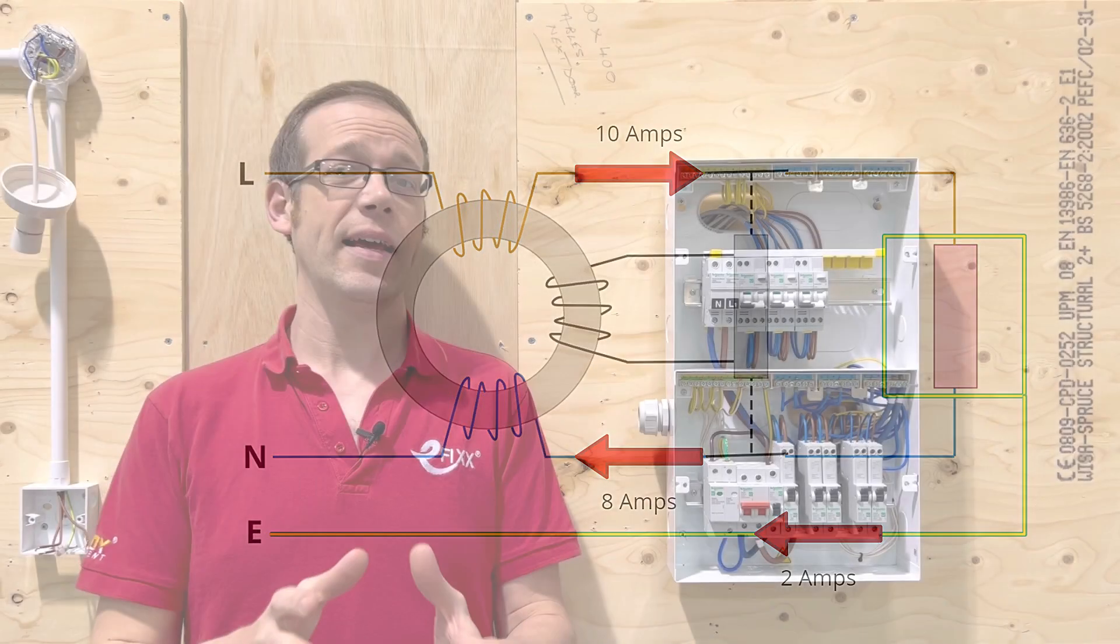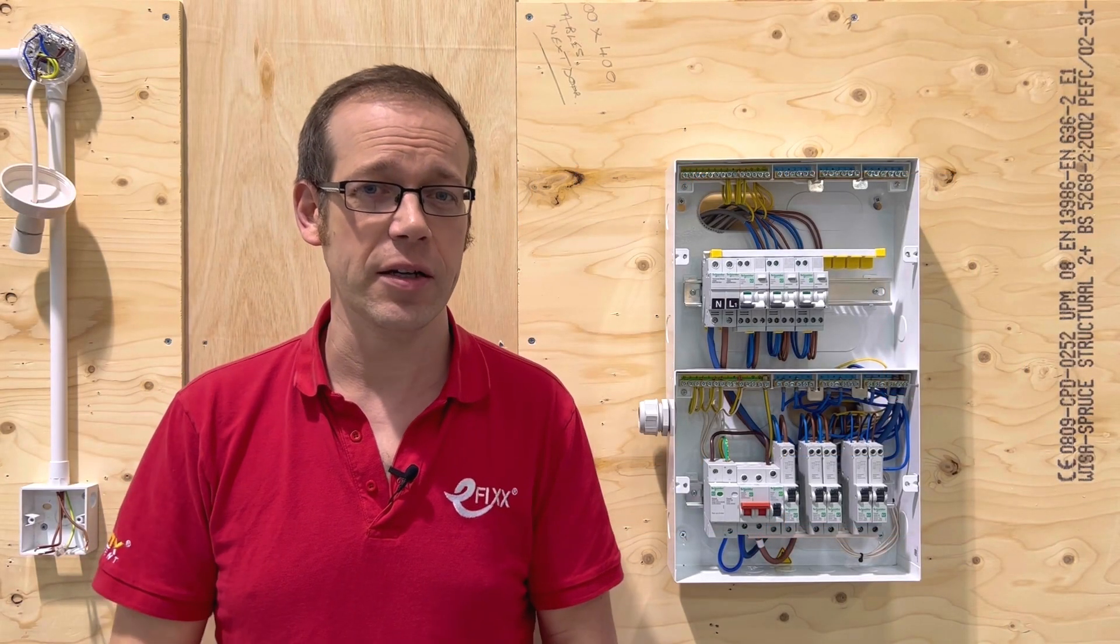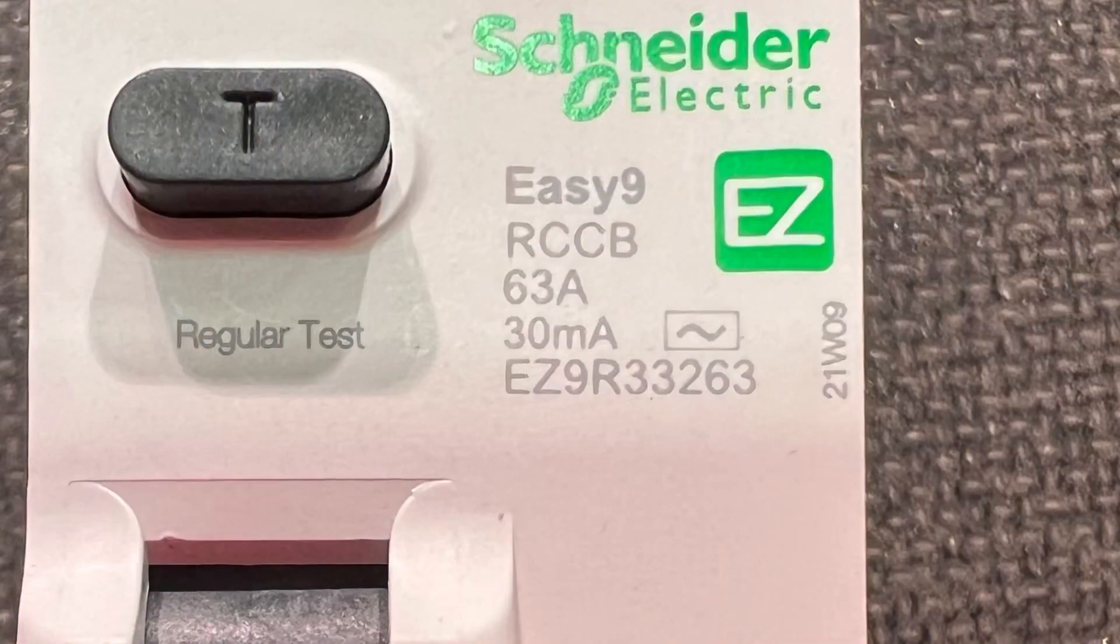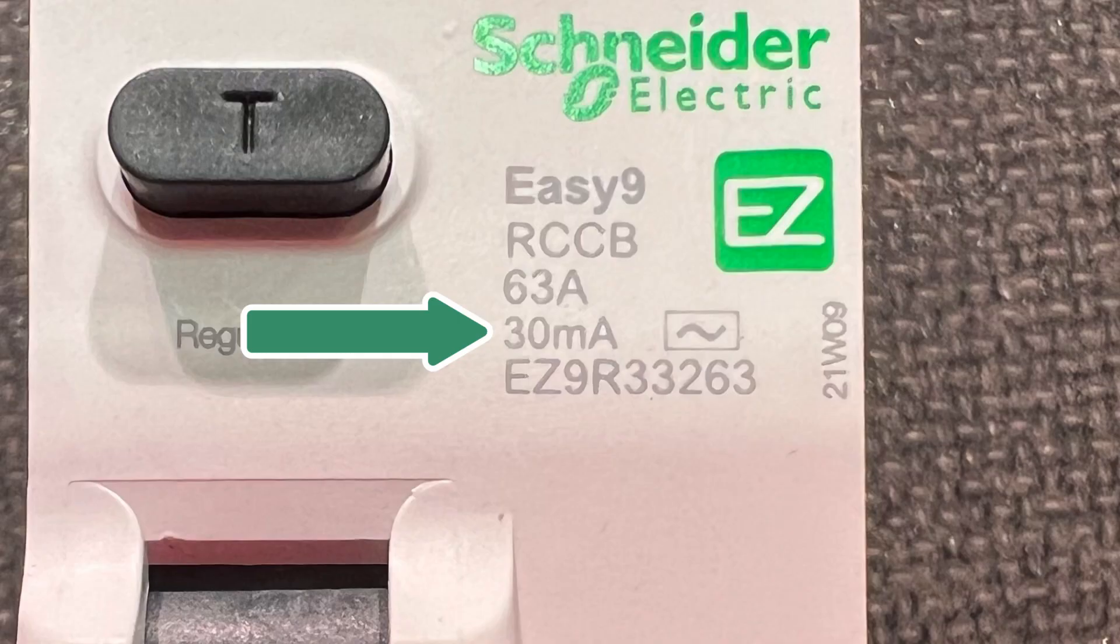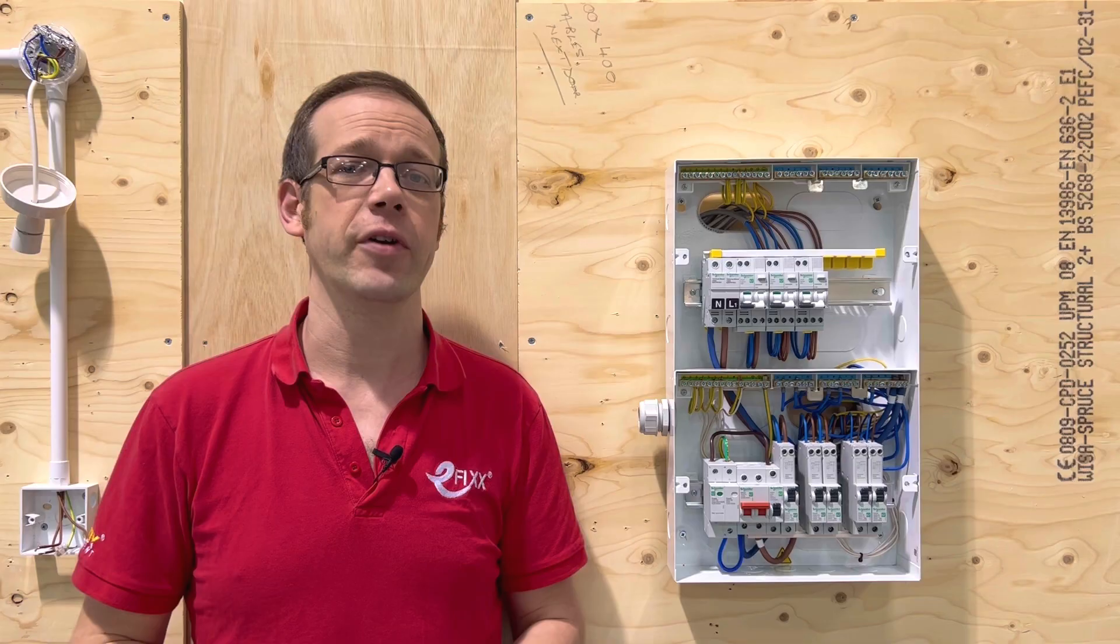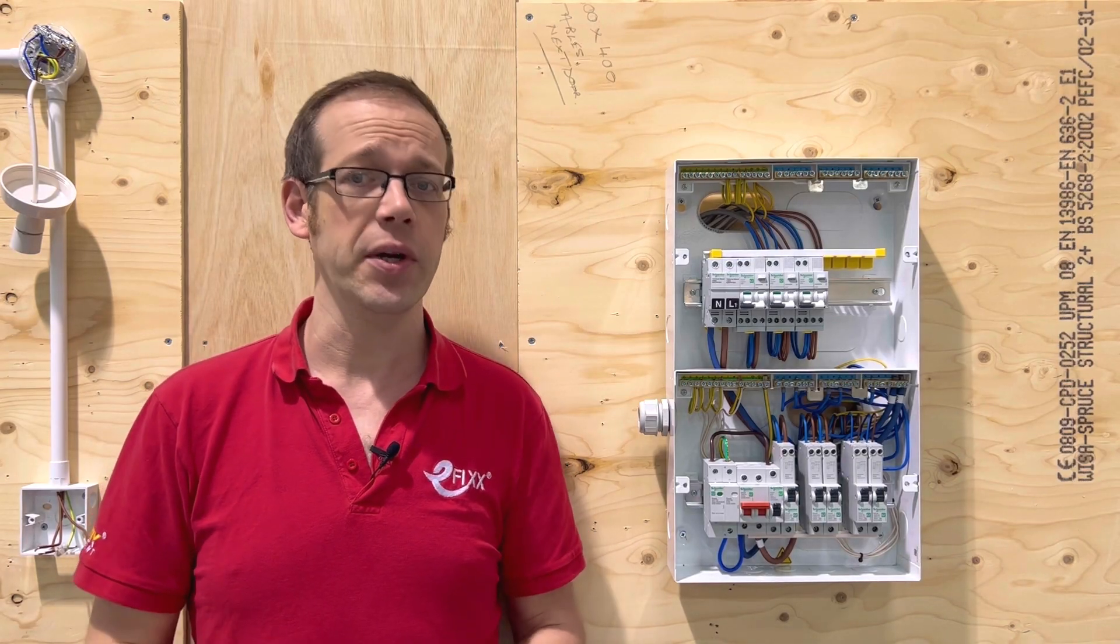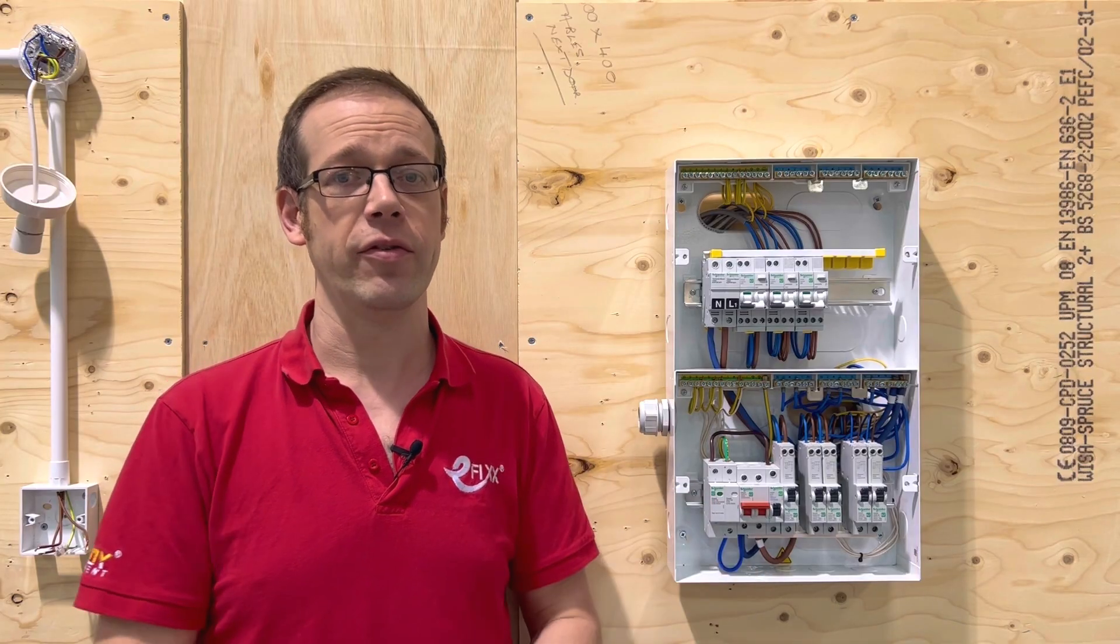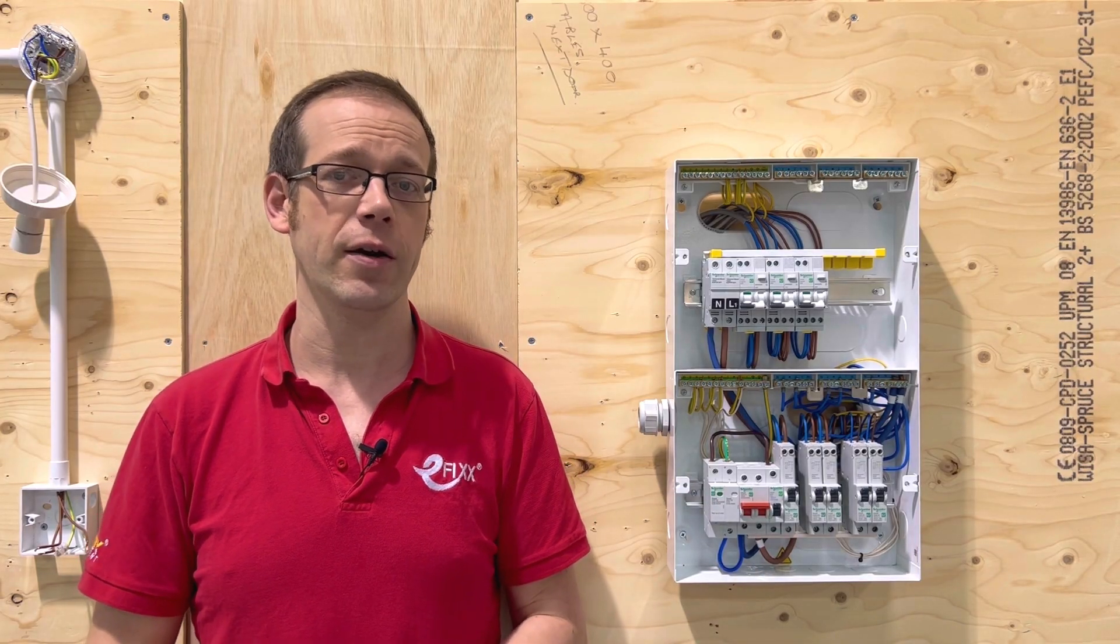An RCD can detect absolutely minute differences in current. For a device offering additional protection this current will be as small as 30 milliamps or 30 thousandths of an amp. That's a microscopic amount of current. It's usually considered that it takes 50 milliamps of current flowing across the heart to kill a person. So an RCD won't allow this amount to flow through a person to earth and could therefore save the life of someone receiving a shock.